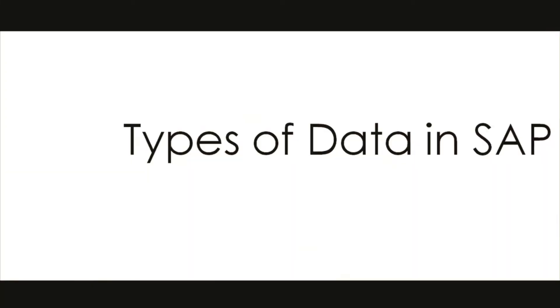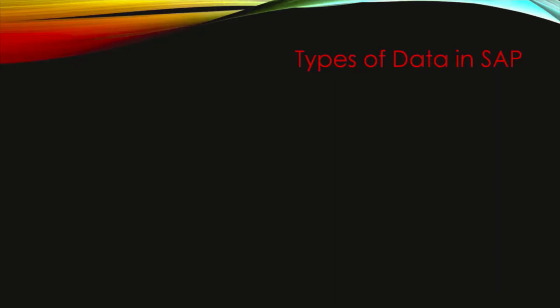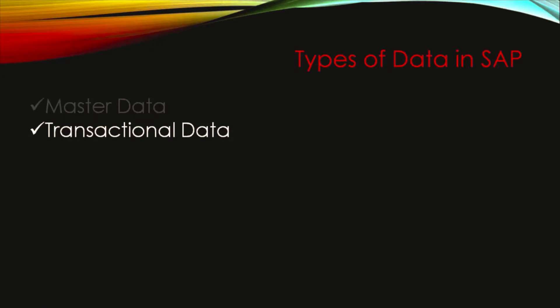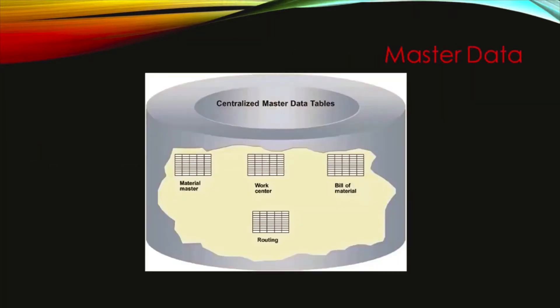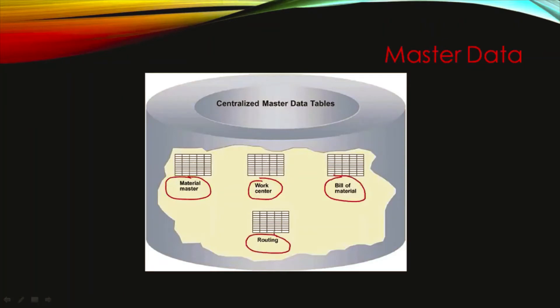Next, types of data in SAP. We have basically three types of data: number one is master data, number two is transactional data, and number three is customizing data. Everything revolves around master data. We have different types of master data — for example, material master records, work center (which means machines), bill of material, and routing. We'll talk about those in detail in the next video.